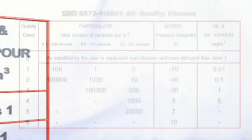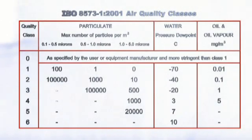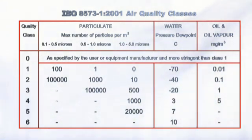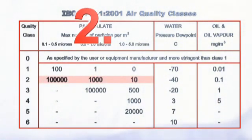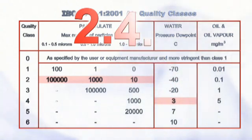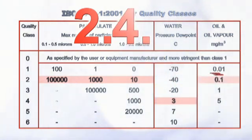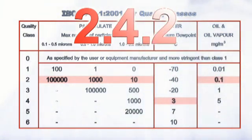Air quality, when defined by the ISO standard, is understood by a three-digit number. The first digit relates to the allowable levels of particulate, the second to water, and the third to oil.